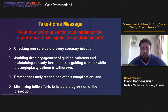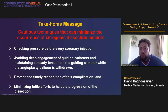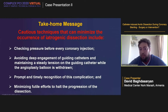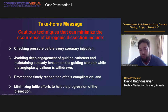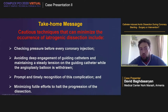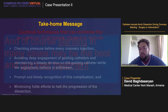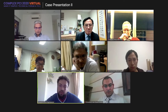Take-home message: Cautious techniques to minimize iatrogenic dissection include: checking pressure before every coronary injection; avoiding deep engagement of guiding catheters and maintaining steady tension on the guiding catheter while the angioplasty balloon is withdrawn; prompt and timely recognition of this complication; and minimizing futile efforts to prevent progression of the dissection. In many cases, stenting may be the best and quickest treatment. Thank you very much.